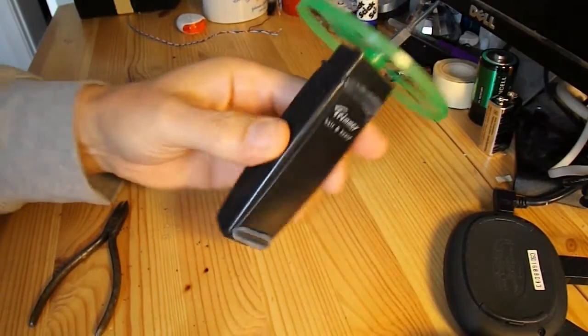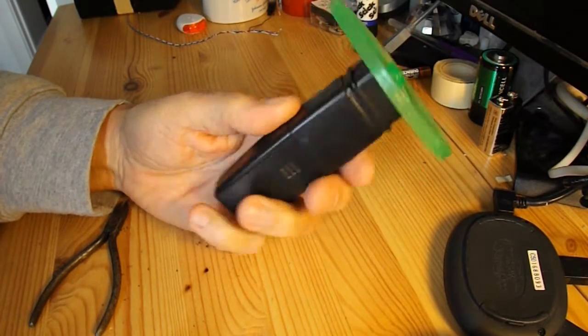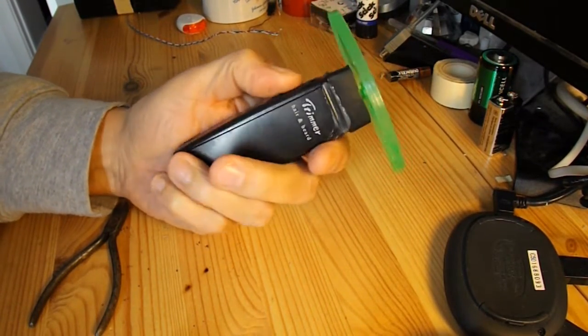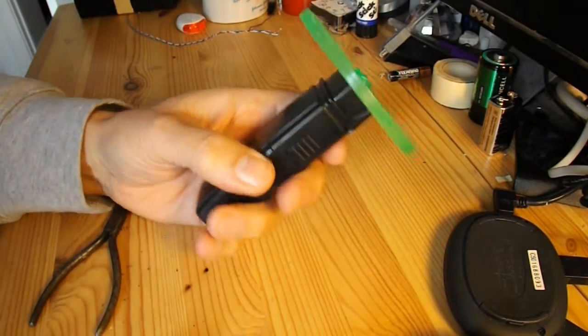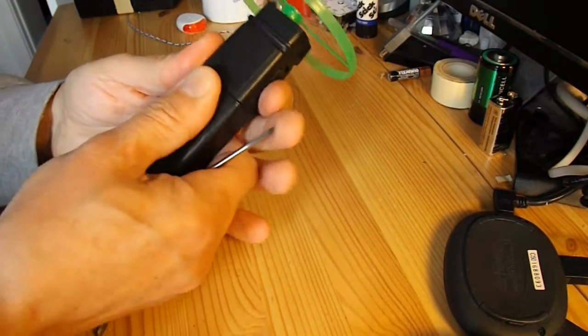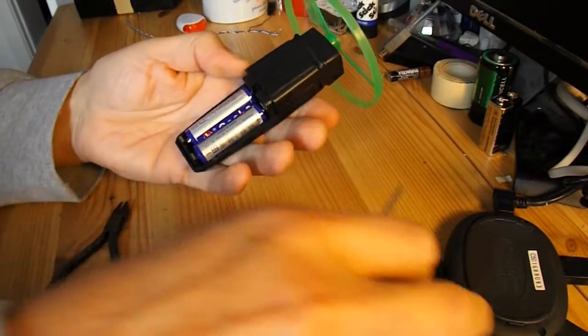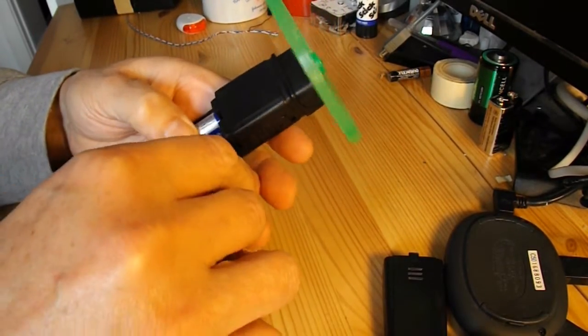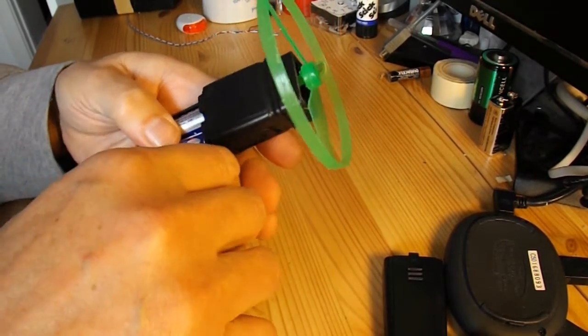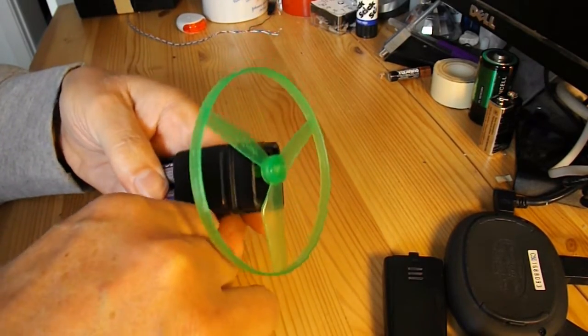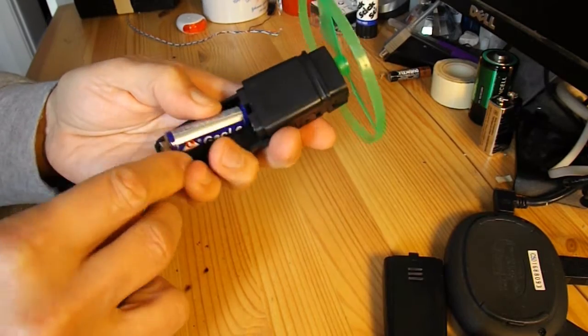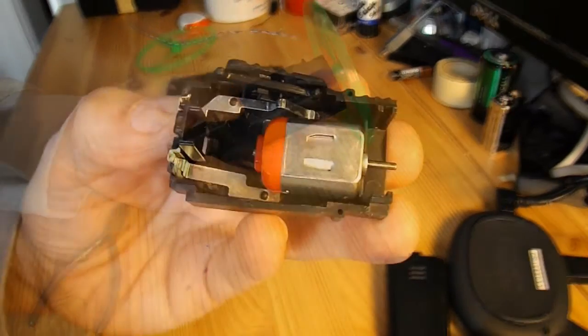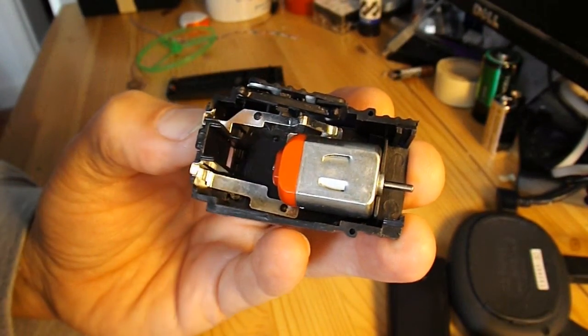Right, first thing we're going to need to do is intercept the switch and the motor wiring from inside the beard trimmer. I'll take the batteries out for now. Right, that's the insides, I need to attach three wires.